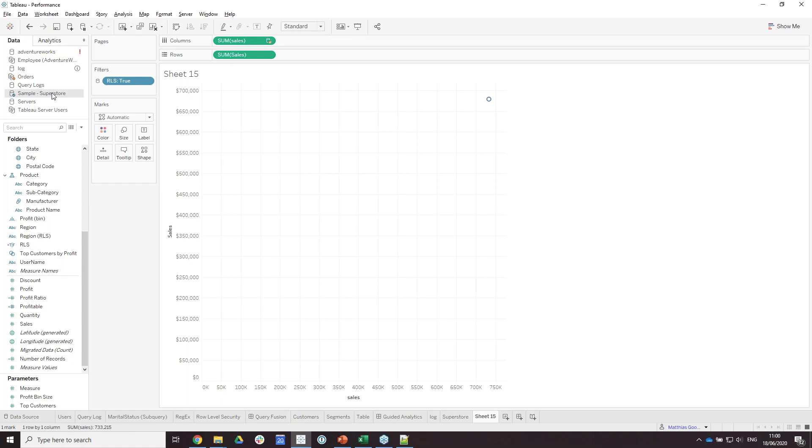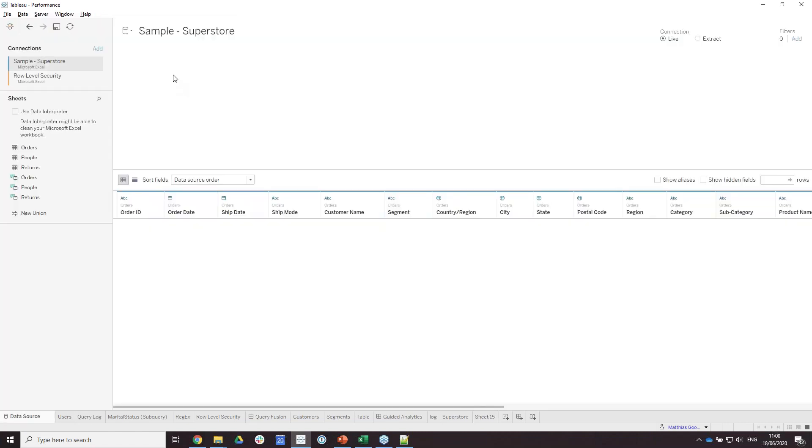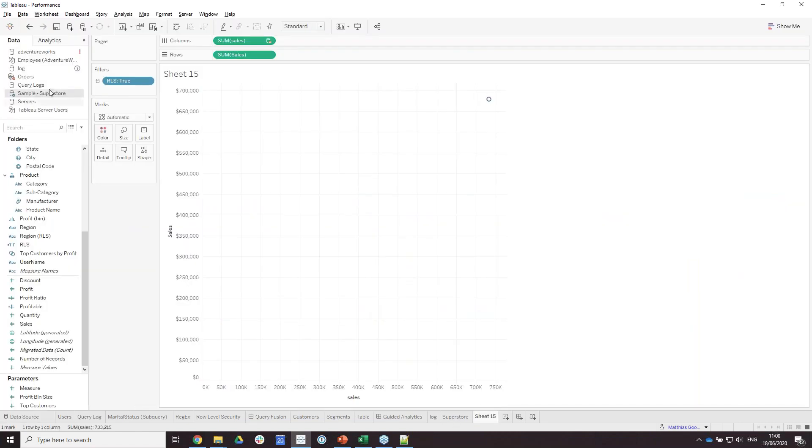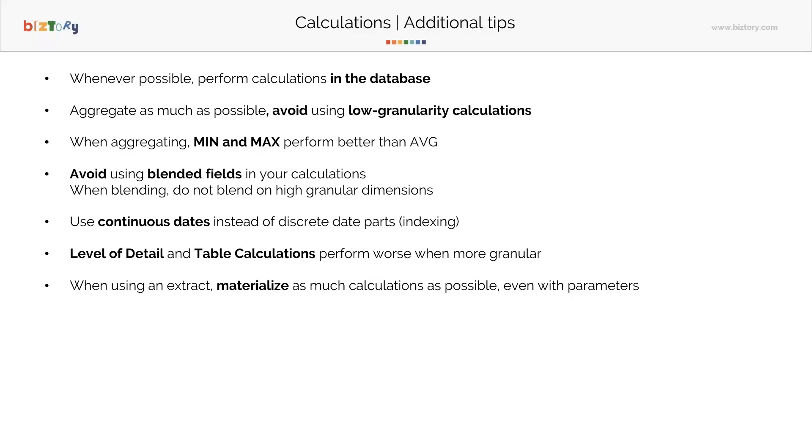This is the concept of blending. You're basically firing queries to two data sources—in this case, sample superstore being the Excel and the superstore in Postgres. So you're firing two queries at once to two different data sources. And especially when you're blending and you have performance issues, blending is quite impacting on performance in a negative way.